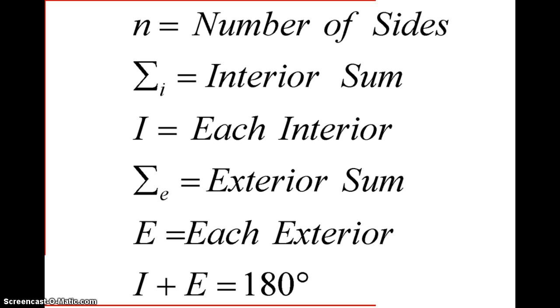So n is the number of sides of our polygon, sigma i, which is the summation, that's our interior sum. Then we have each interior, our exterior sum, each exterior, and what we noticed in class is that each interior and each exterior are a linear pair. So they are supplementary, meaning they add up to 180 degrees.